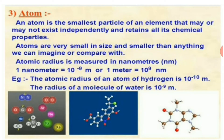An atom is the smallest particle of an element that may or may not exist independently, and it retains all its chemical properties. Atoms are very small in size — smaller than anything we can imagine — and cannot be seen by the naked eye. The atomic radius is measured in nanometers, where one nanometer equals 10⁻⁹ meters. The atomic radius of a hydrogen atom is 10⁻¹⁰ meters, and the radius of a water molecule is 10⁻⁹ meters.